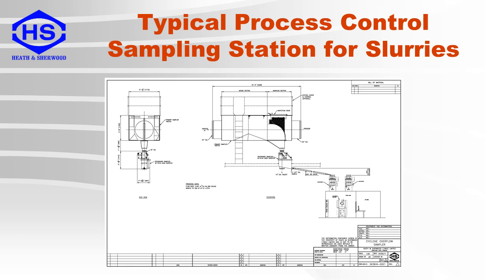Here is another example of a process control sampling station for slurry — in this case, a launder sampler. These are designed for slurry flows which are not under pressure. Inside the sampler is a fixed cutter which collects a portion of the stream as the sample. The sample then goes to a diverter, which is used to supply a constant sample flow rate to an X-ray fluorescence analyzer.